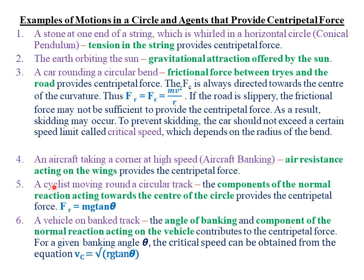The fifth example is a cyclist moving around a circular track. The agent that provides the centripetal force is the component of the normal reaction acting towards the center of that circle. The frictional force in this case is given by mg·tan(θ), where m is the mass of the cyclist, g is gravity, and θ is the angle of bending from the center of the circular track.